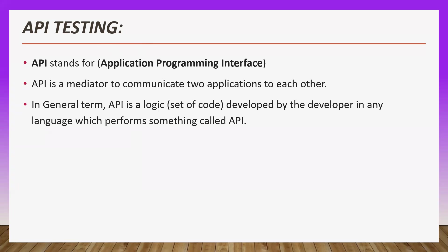In general terms, API is nothing but a set of code. There will be no user interface of the application. Behind API testing, the code is developed first — developers develop the set of code in any language. API is a set of logic, a set of code, and we need to perform testing on that code where there is no user interface.